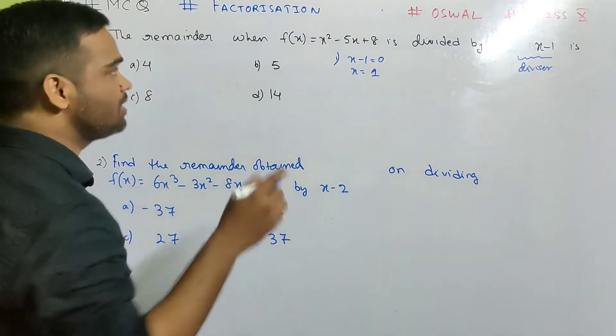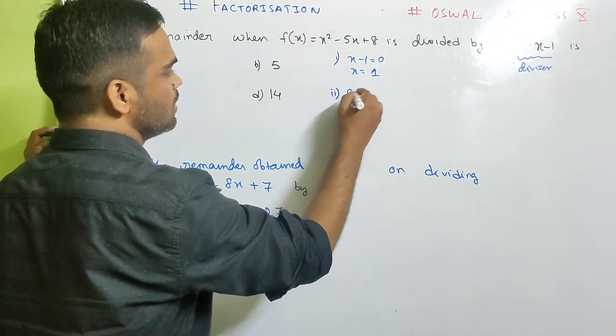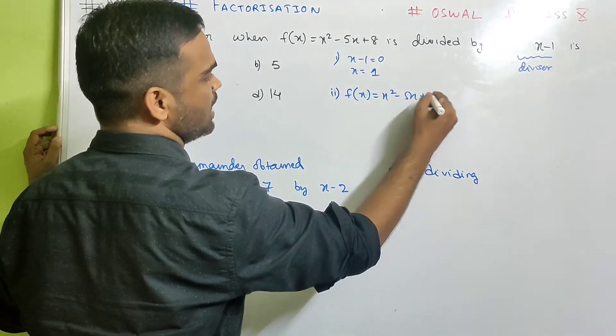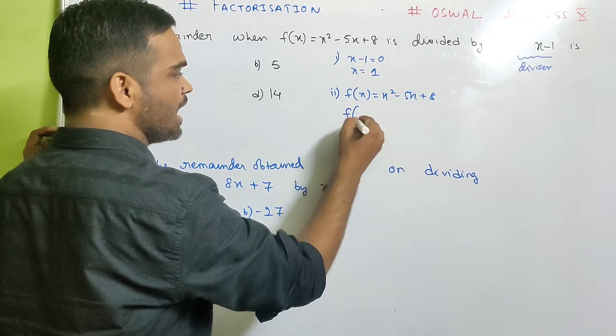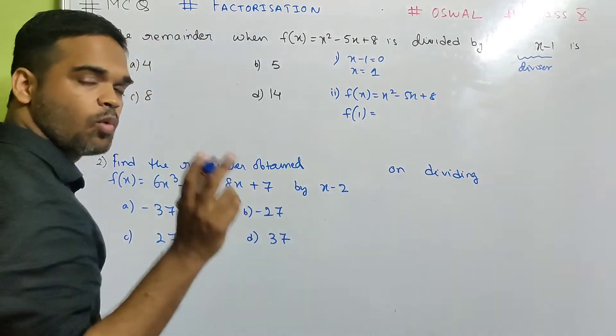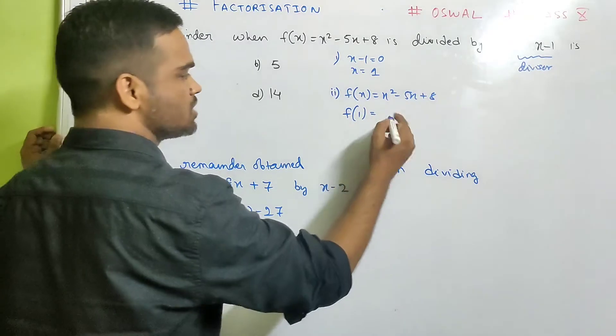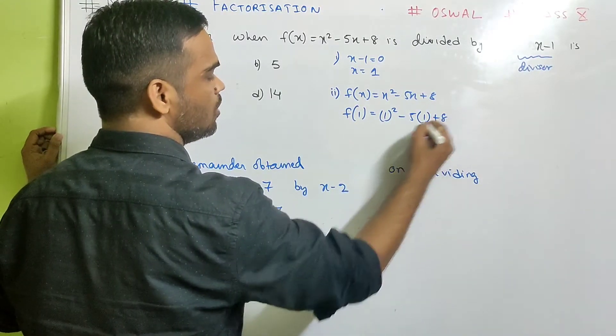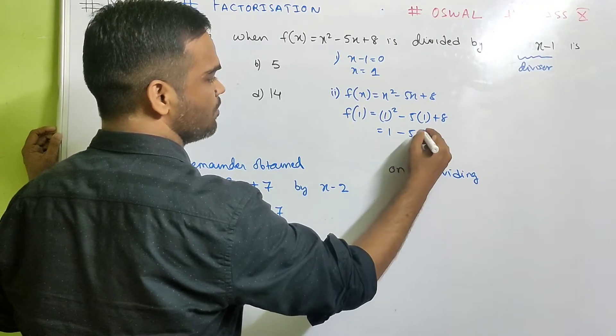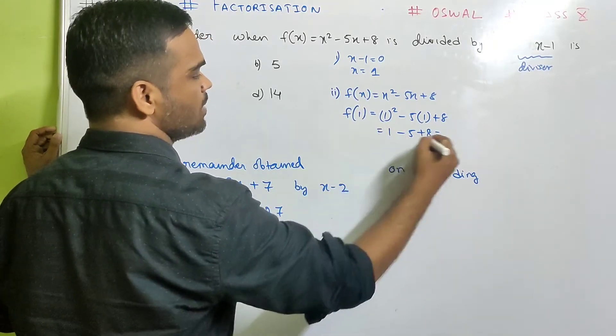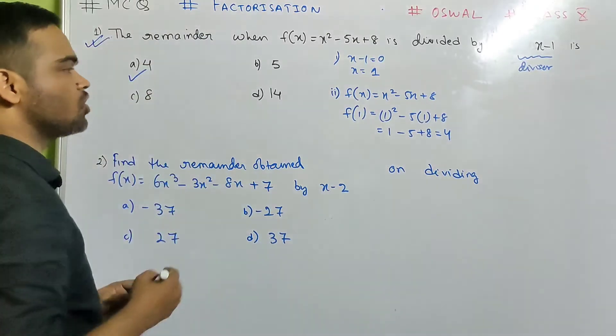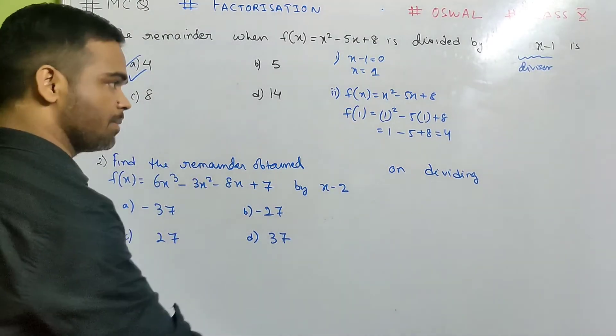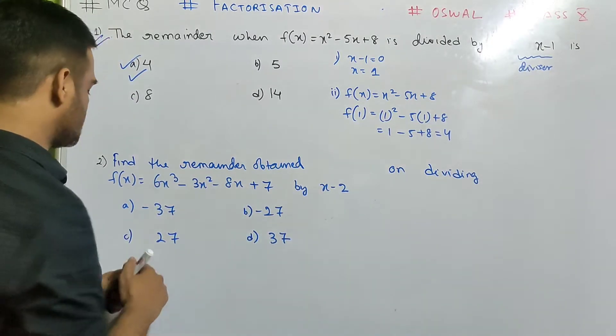We'll equate the divisor with 0, so we'll get the value of x as 1. Then we'll find, this is your f(x), second step, f(x) is x squared minus 5x plus 8. What we'll find? We'll find f of 1. And whatever value comes is your remainder. So instead of x, you put 1. Look, 1 minus 5 plus 8, that's 9 minus 5, that's 4. So your first option is correct, isn't it? What is the remainder?